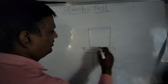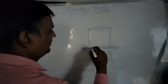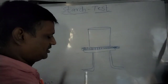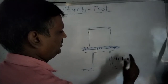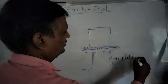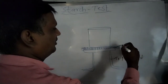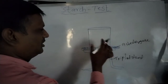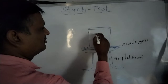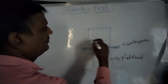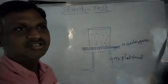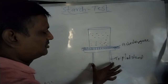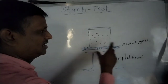Above the tripod stand, an iron net or asbestos gauze is kept. So the setup is: tripod stand at the base, asbestos gauze on top of it, and then a beaker placed above the asbestos gauze, with approximately one-third of water taken into the beaker.